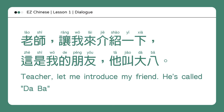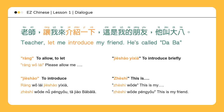老师，让我来介绍一下。这是我的朋友，他叫大巴。Teacher, let me introduce my friend. He's called 大巴. 让 means to allow, to let. 让我来 means please allow me. 介绍 means to introduce. 让我来介绍一下. 介绍一下 means to introduce briefly. 这是 means this is. 这是我的。